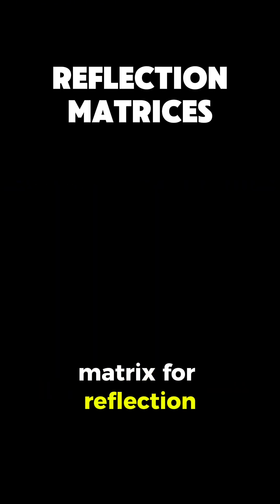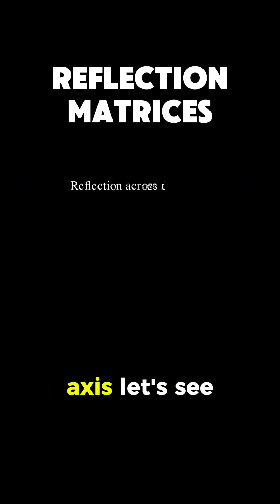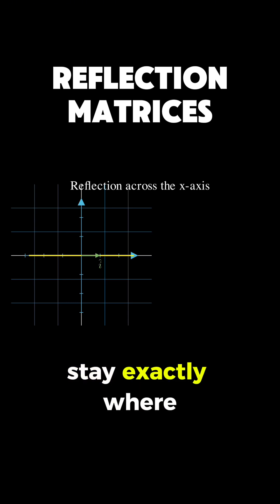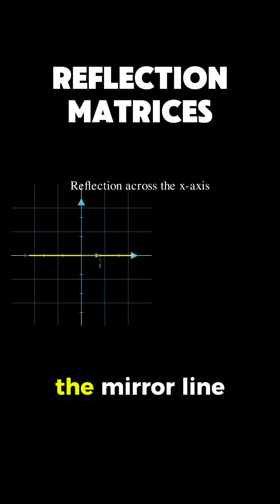To understand the matrix for reflection across the x-axis, let's see where our basis vectors go. The vector i, which lies along the x-axis, stays exactly where it is because it's on the mirror line, so it maps to 1 and 0.